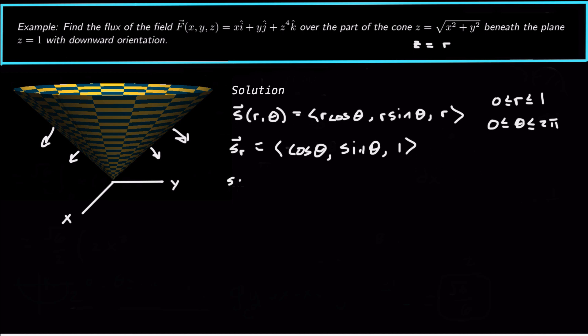And s sub theta is going to be differentiate with respect to theta. So we get negative r sine theta, r cosine theta, and 0. So differentiating with respect to theta, that's what we get.